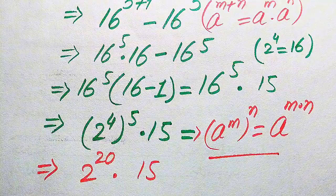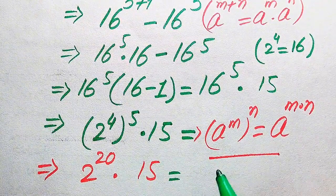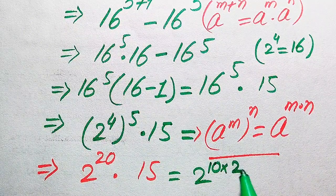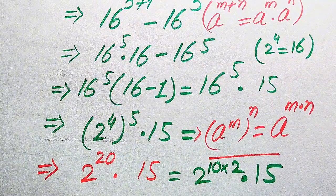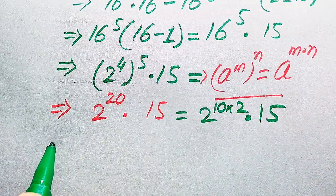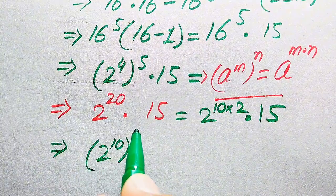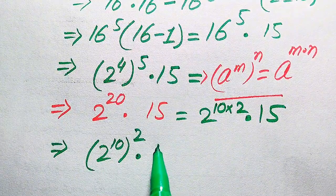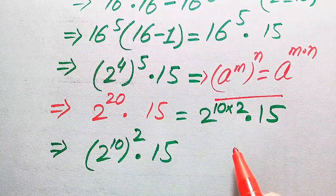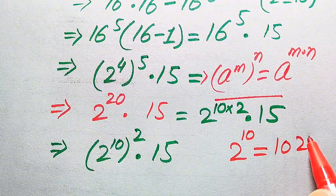We rewrite 2 to the power of 20 as 2 to the power of 10, multiplied by 2 to the power of 10 — since 10 plus 10 equals 20. Applying the exponent law from right to left, this becomes (2 to the power of 10) whole squared, multiplied by 15. We know that 2 to the power of 10 equals 1024.